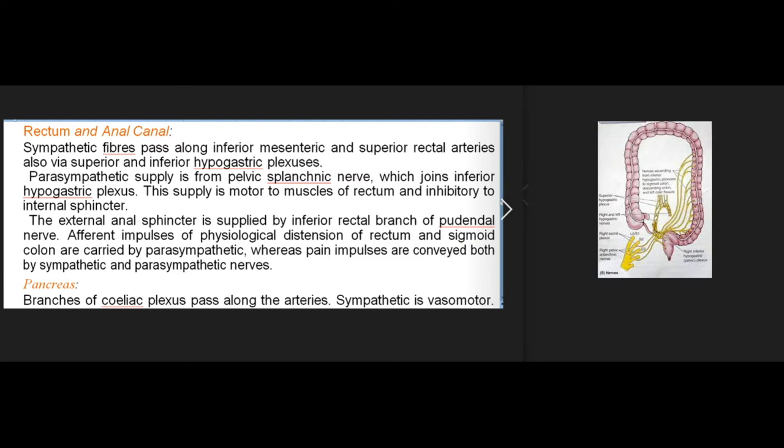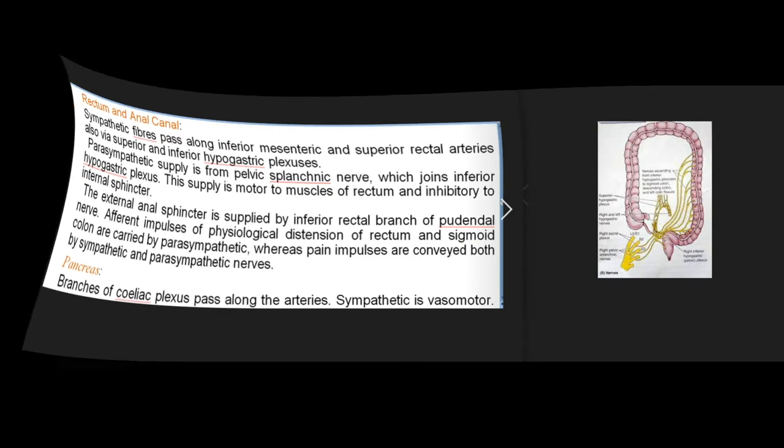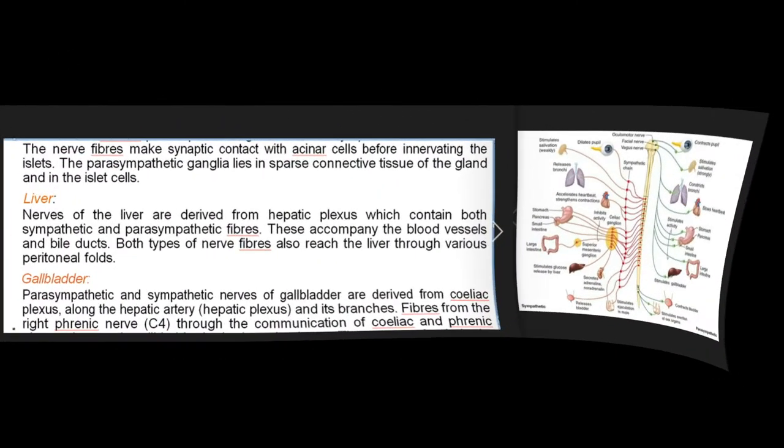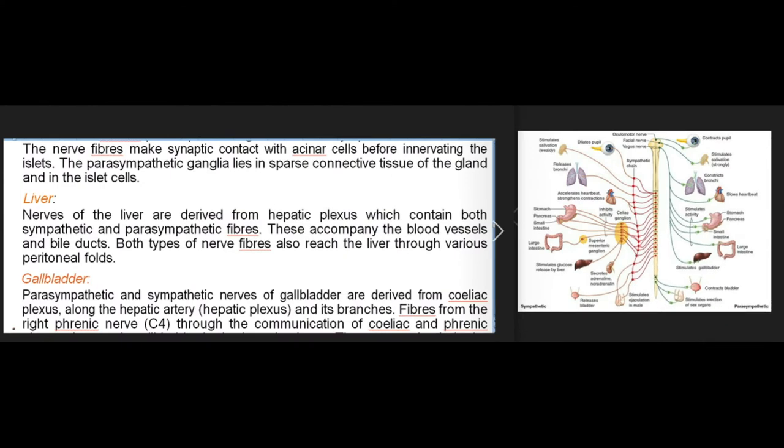Pancreas: branches of the coeliac plexus pass along the arteries. Sympathetic is vasomotor. The nerve fibers make synaptic contact with the acinar cells before innervating the islets. The parasympathetic ganglia lie in sparse connective tissue of the gland and in the islet cells.